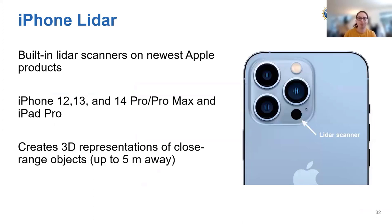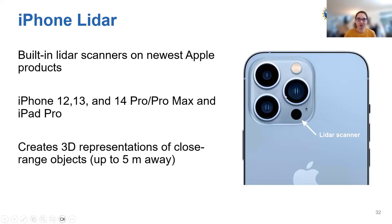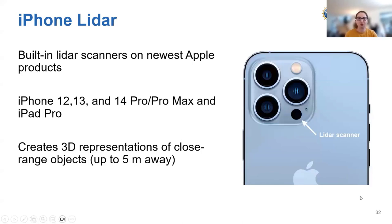iPhones now have a built-in LiDAR scanner on the newest Apple products. If you have a new iPhone, alongside the cameras, the little gray-black circle at the bottom is the LiDAR scanner. This is available on iPhones 12, 13, and 14 Pro and Pro Max, along with the iPad Pro — it has to be a Pro version with the three-camera configuration. If you have an iPhone 12, 13, or 14 Pro, you have the power of LiDAR right in your cell phone. You can use iPhone LiDAR to create 3D representations of close-range objects — typically a range of up to about five meters.